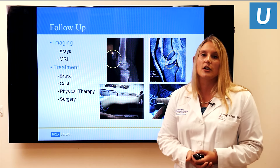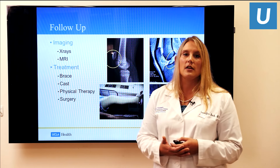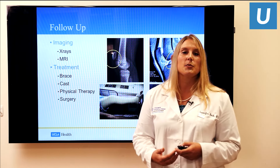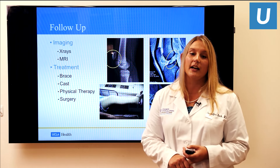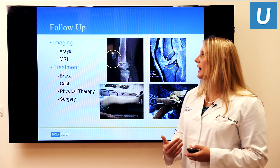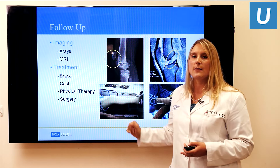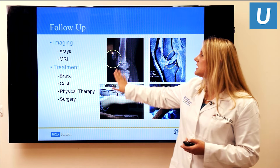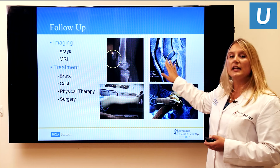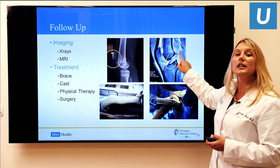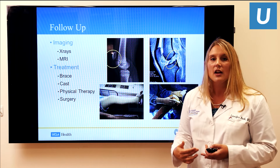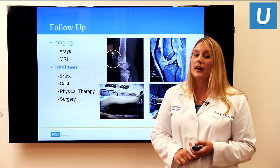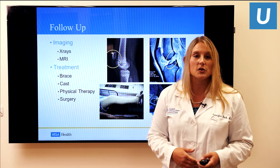Follow-up typically involves an x-ray showing bones, fractures, and anything out of place. If we're concerned about ligament injury such as the ACL or MCL, or about the meniscus, we'll follow up with an MRI. On x-ray you can see special pediatric patella fractures with fragmentation. On MRI, an ACL tear is visible — the ACL should appear in a cross pattern, and if torn, it's simply not there anymore. Treatment varies from a brace, cast, or physical therapy to surgery, which is why specialty care is so important.